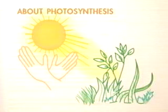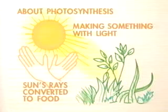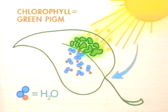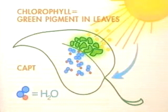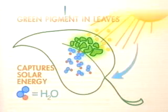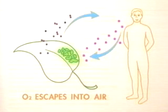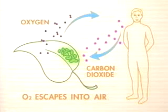About photosynthesis — literally, it means making something with light. This is the process by which all plants and some bacteria use the sun's rays to make food. In the case of plants, a green pigment in the plant's leaves called chlorophyll captures solar energy and uses it to split water, H2O, into hydrogen and oxygen. The hydrogen combines with carbon dioxide absorbed from the air to make carbohydrates, which are stored and used to drive the plant's life processes. The oxygen escapes into the air so we can inhale it and exhale carbon dioxide to keep the cycle going. Chlorophyll green is at the heart of photosynthesis and its life-sustaining process.